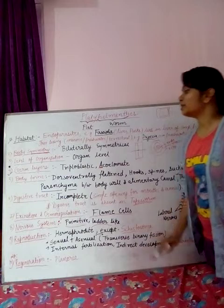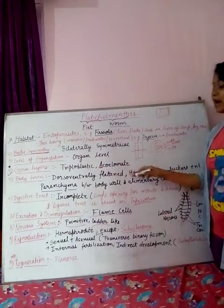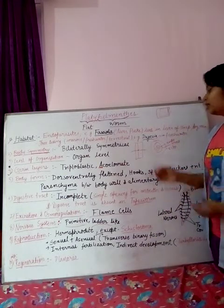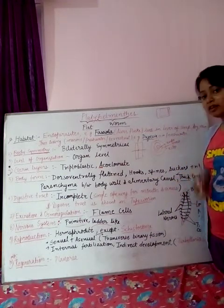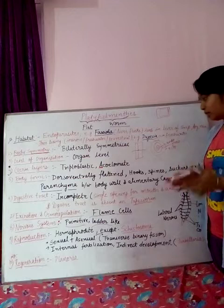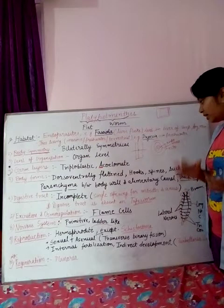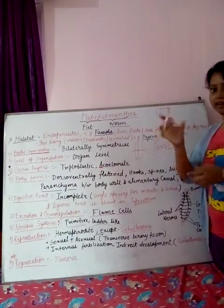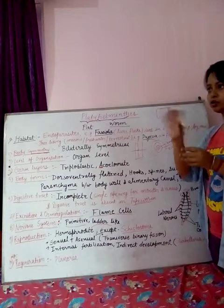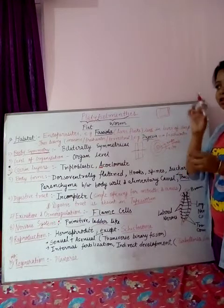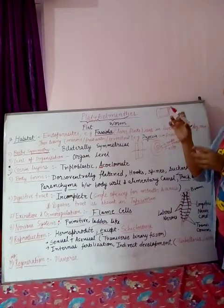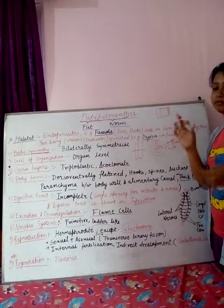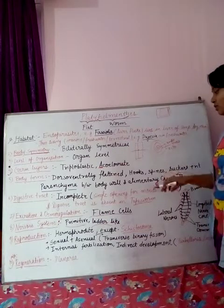The body form is dorsally and ventrally flattened. They are just like a flat structure — similar to a tape, which is a very flattened structure.